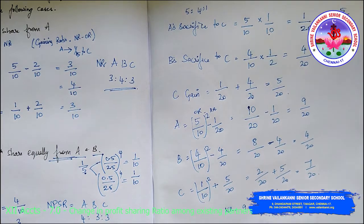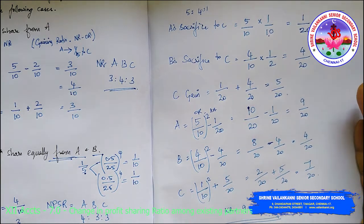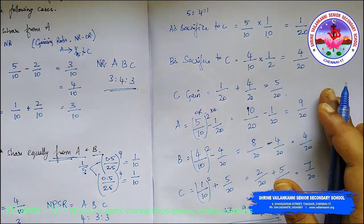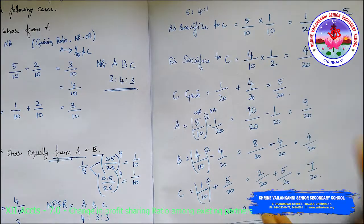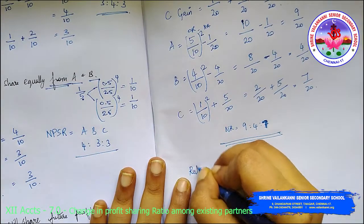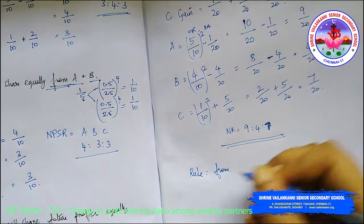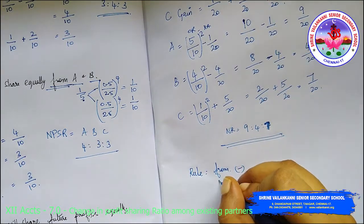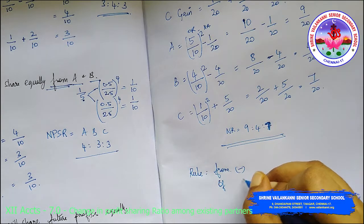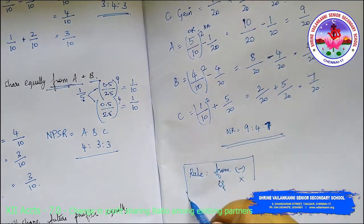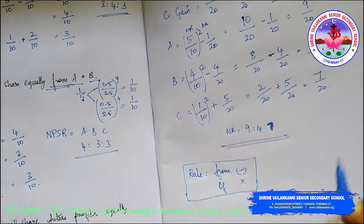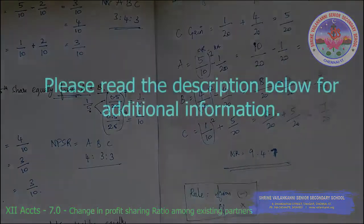So the new ratio is 9:4:7. I hope this is clear. If you haven't understood, watch the video one more time. One rule to always remember: if it says 'from', then deduct; if it says 'of', then multiply. Practice, and I will meet you in the next problem. Thank you, class.